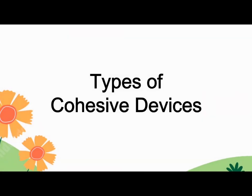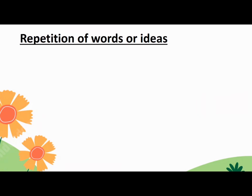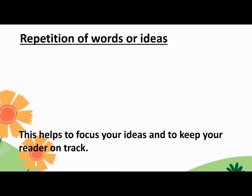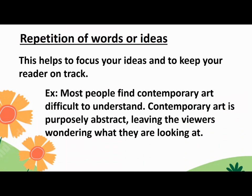There are different types of cohesive devices. The first is repetition of words or ideas. This helps to focus your ideas and to keep your reader on track. Example: Most people find contemporary art difficult to understand. Contemporary art is purposely abstract, leaving the viewers wondering what they are looking at.